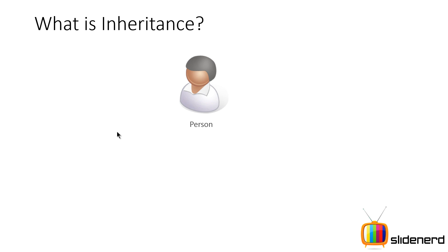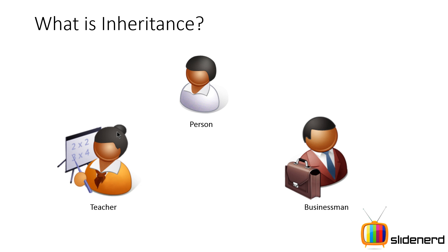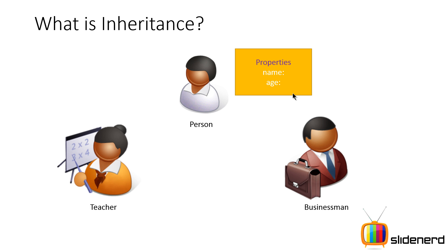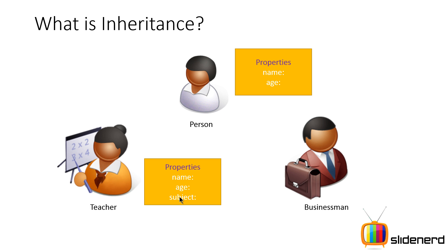Let's take a look at what inheritance is. There is a person, a teacher, and a businessman. In terms of a program, you can think of a person as a class with properties like name, age, and date of birth. To keep things simple, I've taken name and age. A teacher also has properties like name, age, the subject they teach, and maybe salary.